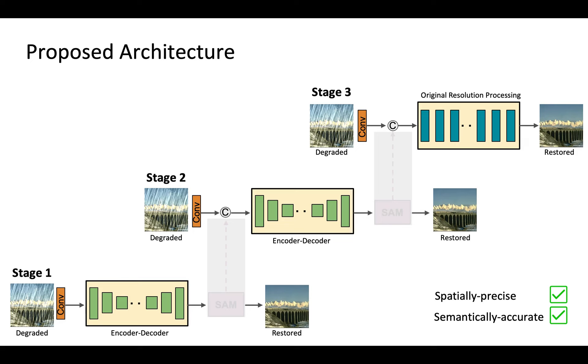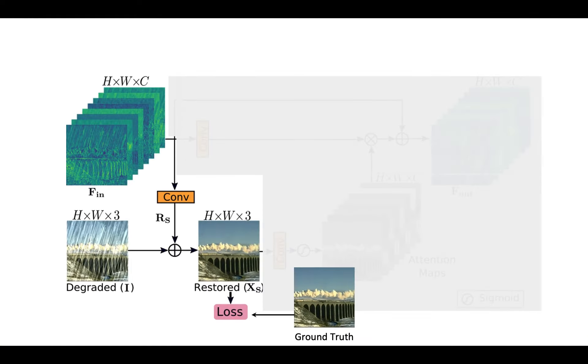Next, we do not directly pass the output image from one stage to the next stage. Instead, we introduce a supervised attention module between every two stages. SAM makes two contributions. First, it provides ground-truth supervision at each stage which is useful for the progressive image restoration.